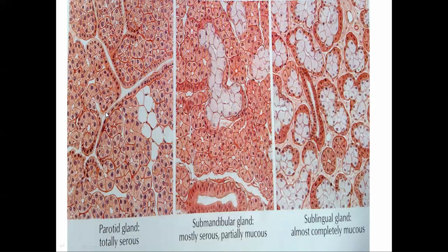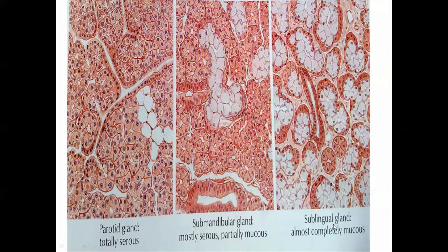Regarding microscopic anatomy: the parotid gland is totally serous in nature. The submandibular gland is a mixed type of gland — mostly serous and partially mucous in nature. The sublingual gland is totally mucous. In MCQs, the parotid gland is serous, the sublingual is mucous, and the submandibular is mixed with predominant serous and partially mucous secretion.